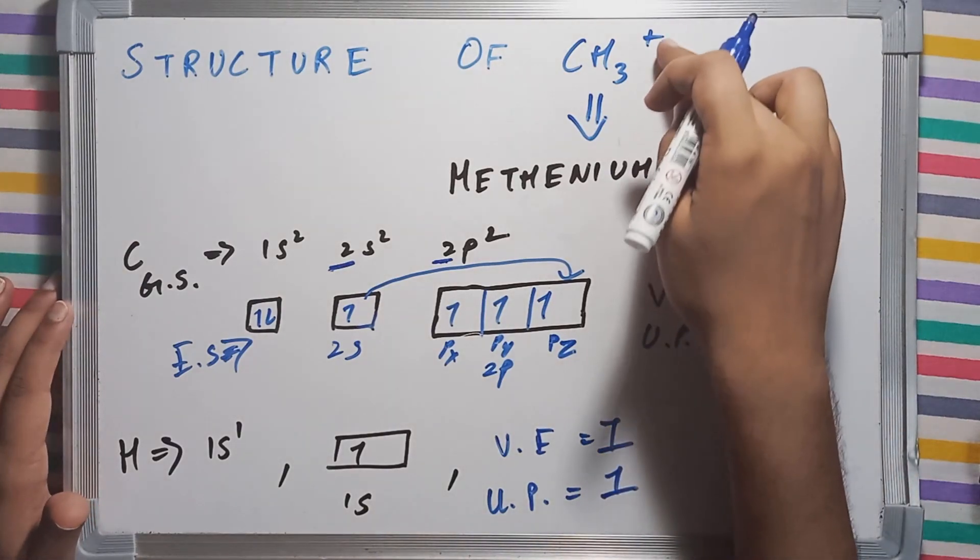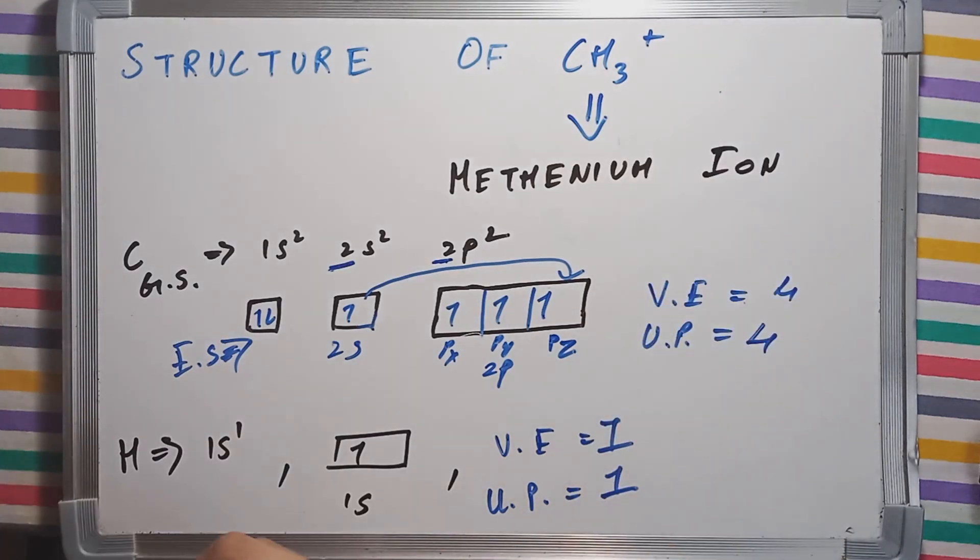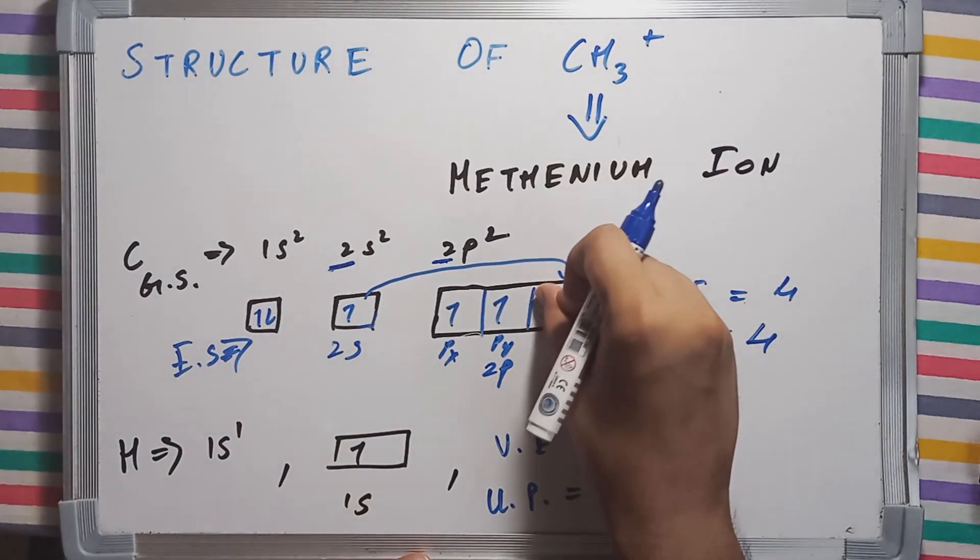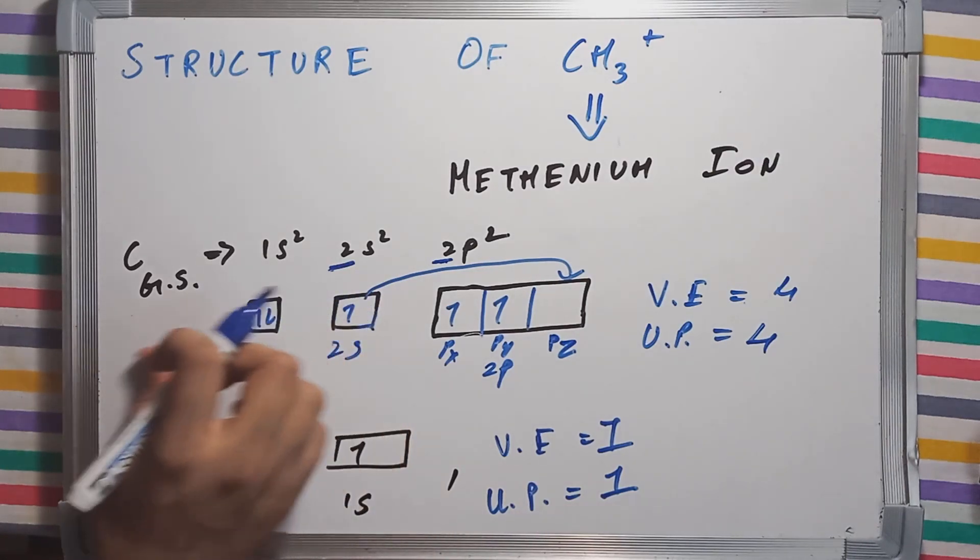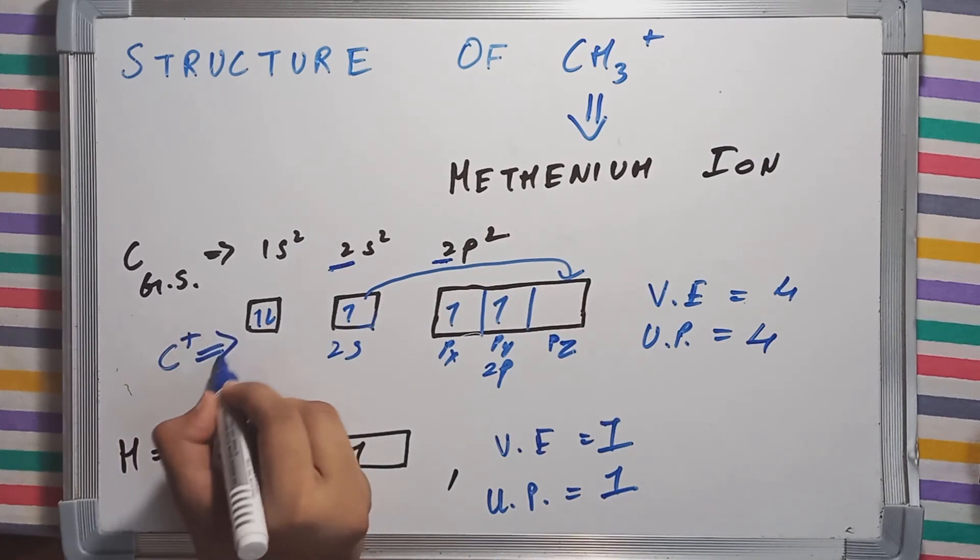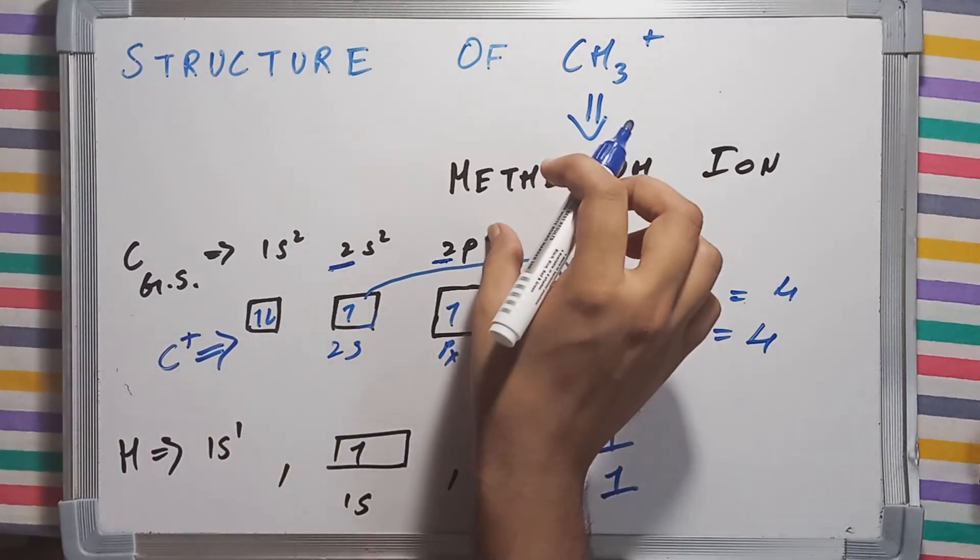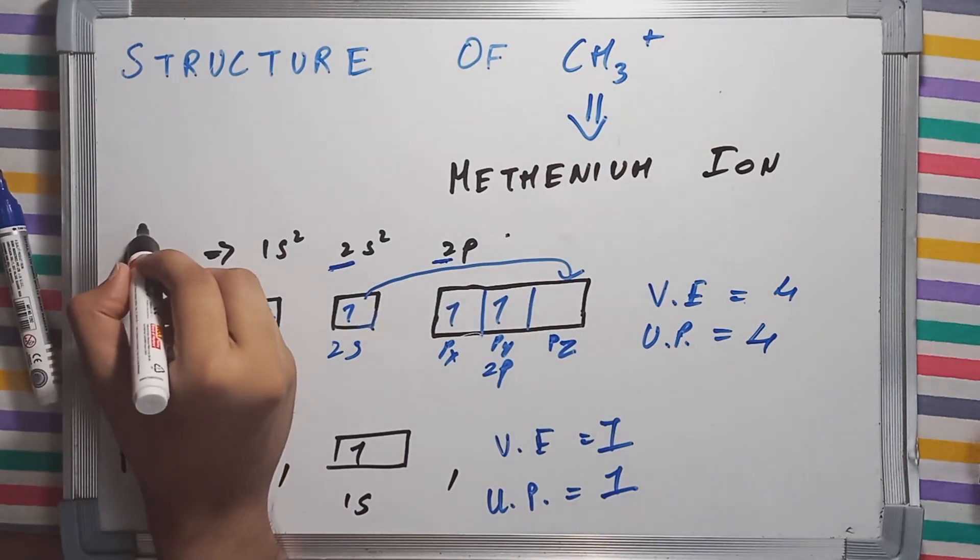Now, carbon is also having a positive charge in methenium ion, which means that I will have to remove one of the electrons. Finally, coming to our point, this is the electronic configuration of C plus, C plus ion.